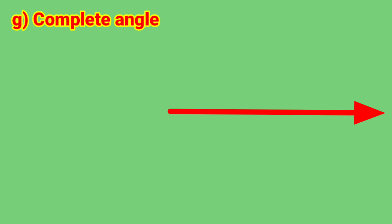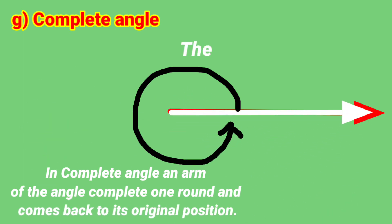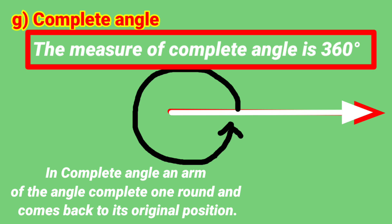Complete angle. In complete angle, an arm of the angle completes one round and comes back to its origin position. The measure of complete angle is 360 degrees.